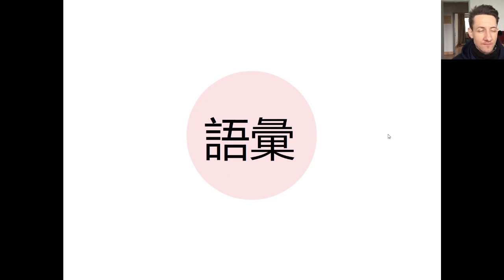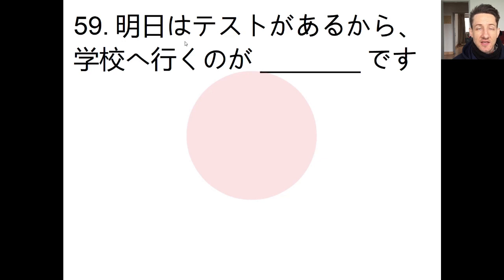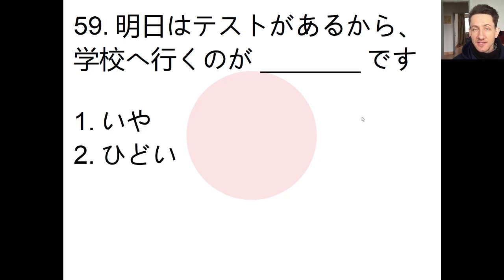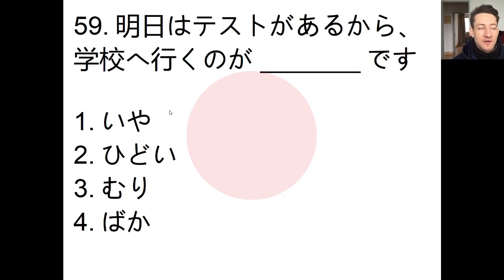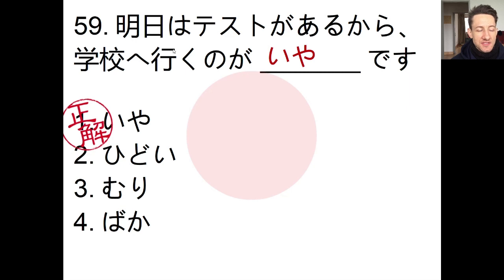Moving on to vocabulary — tango, number 59. We have to choose the word that best completes the sentence: 「明日はテストがあるから学校へ行くのが＿＿です」— ashita wa tesuto ga aru kara gakkou e iku no ga ___ desu. The answer is iya desu. So: ashita wa — tomorrow, tesuto ga aru kara — because there is a test, gakkou e iku no ga — going to school, iya desu — is something I don't want to do / is unpleasant.